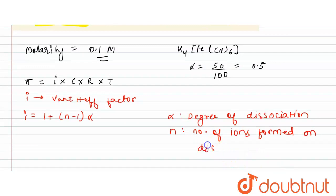So this is n, number of ions formed on dissociation. Now what is our aim? Our aim is to first see what is the value of n.